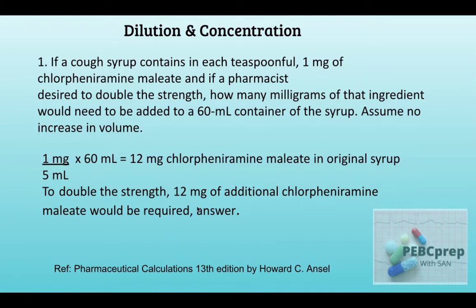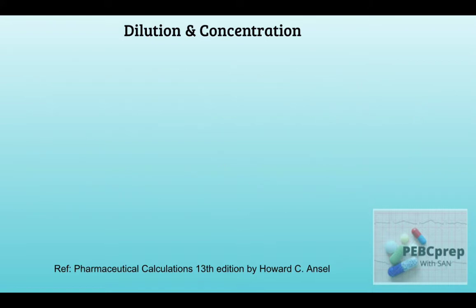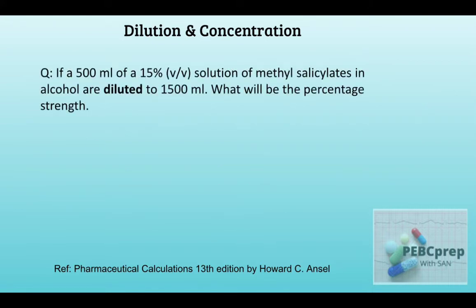So the concentration will be doubled — that's the simplest example. The next question: if 500 milliliters of a 15 percent volume-by-volume solution of methyl salicylate in alcohol are diluted to 1500 milliliters, what will be the percentage strength? We have C1, V1, V2, and we want to find C2.